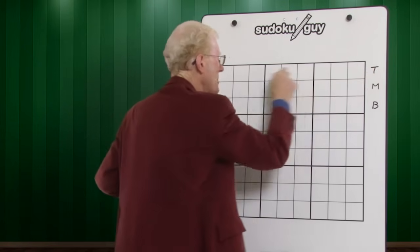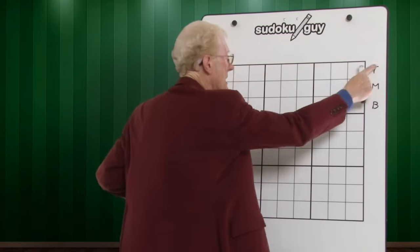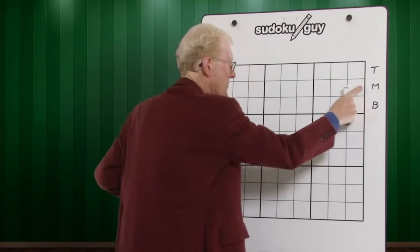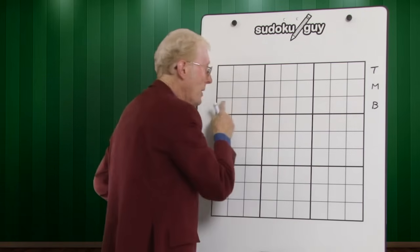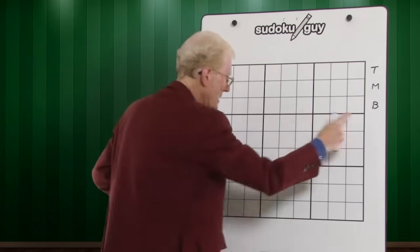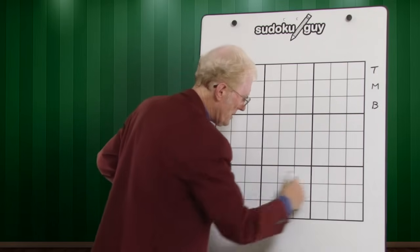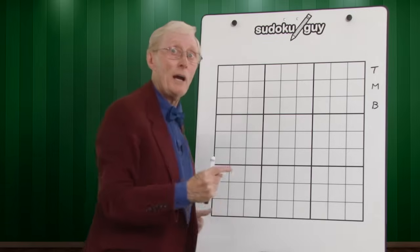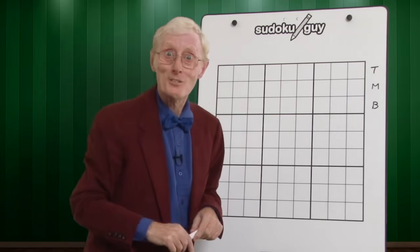The rows can be called TMB. T stands for the top row, M stands for the middle row, and B stands for the bottom row. The same applies to these three blocks and to these three horizontal blocks. So here we are, we're ready for our first lesson on horizontal blocks.